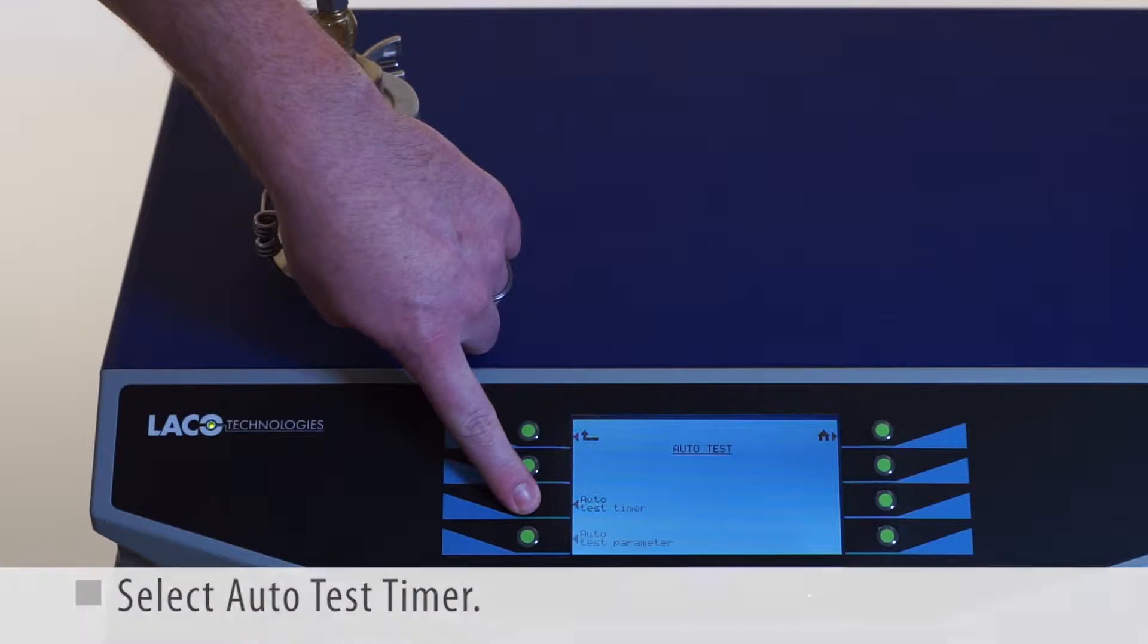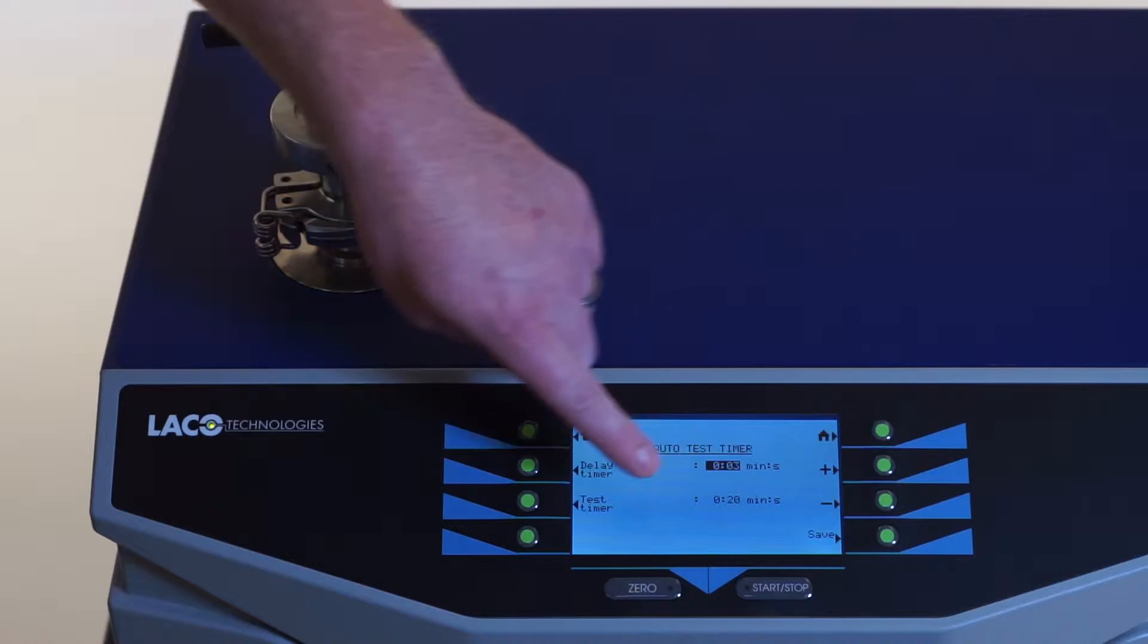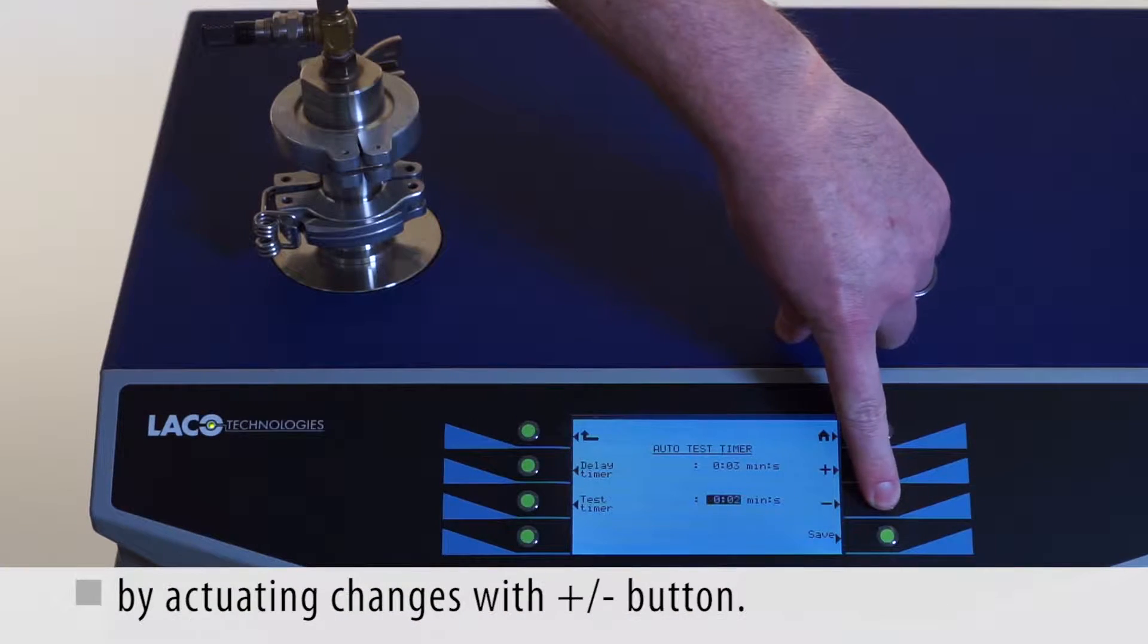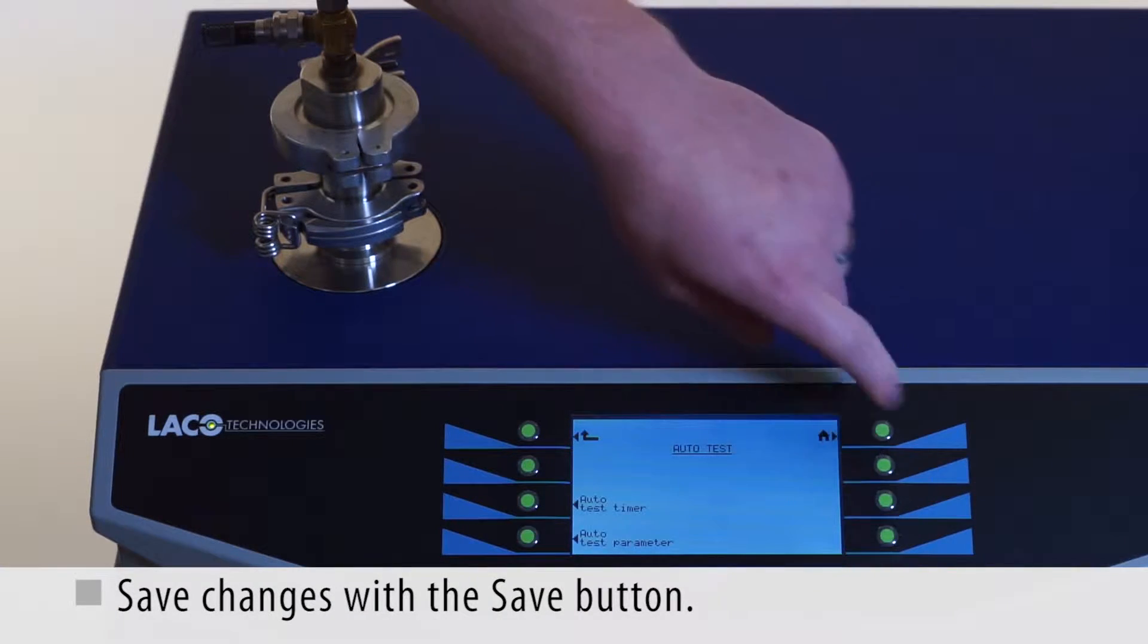Select Auto Test Timer. Here you can change the Delay Timer and Test Timer by actuating changes with the plus or minus button. Save changes with the Save button.